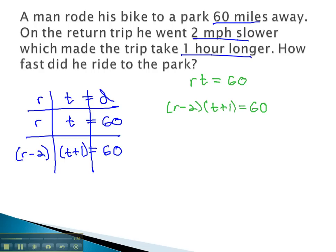In order to start solving, we will divide by what we're looking for. The question asks, how fast did he ride to the park? So we will divide by the rate on both equations.